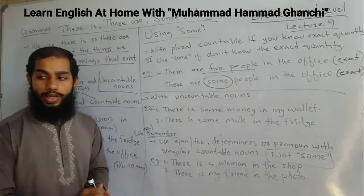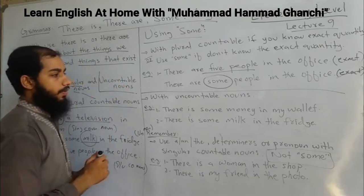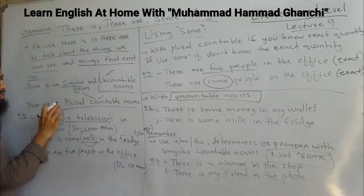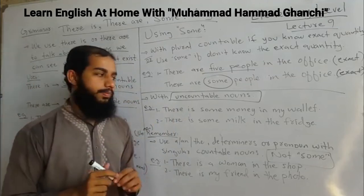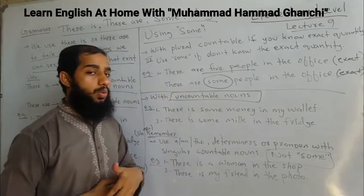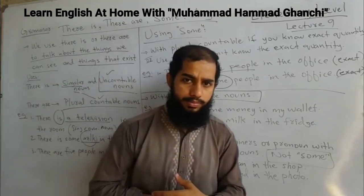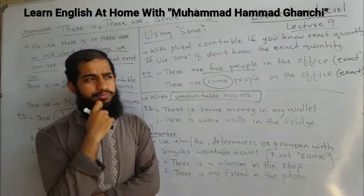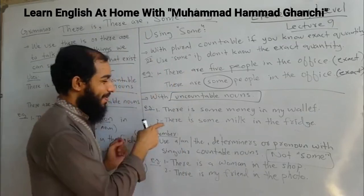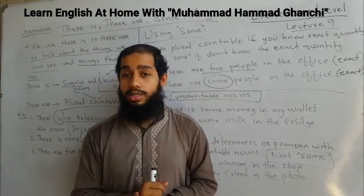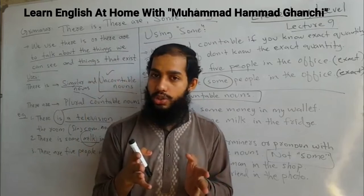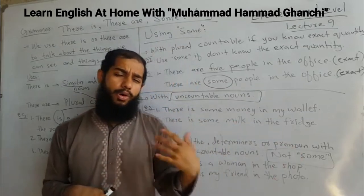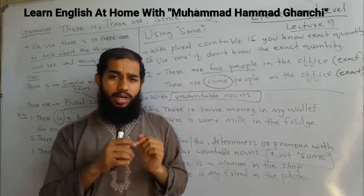Now the second use of 'some' is with uncountable nouns — like water, milk, money. You cannot count them. For example: 'There is some money in my wallet' — money is uncountable, you don't know the exact amount. 'There is something in the fridge' — it is uncountable, so you use 'some.'